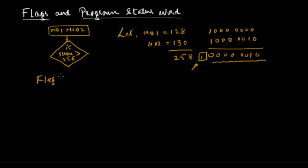So the 8051 provides a way to store this carry bit, and that is called a flag. Flags are one-bit registers which are used to store the result of certain operations. To test whether the sum is greater than 256, we feed two numbers N1 and N2 to the microcontroller, it sums them up, and then we test these flags. If the flag is set, the sum is greater than 256; otherwise it is not.